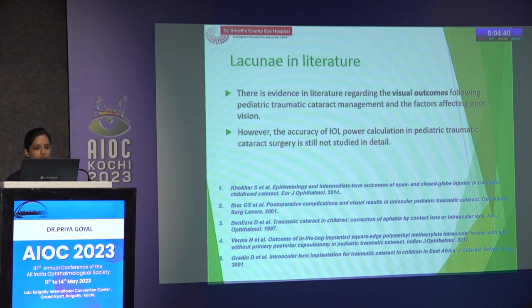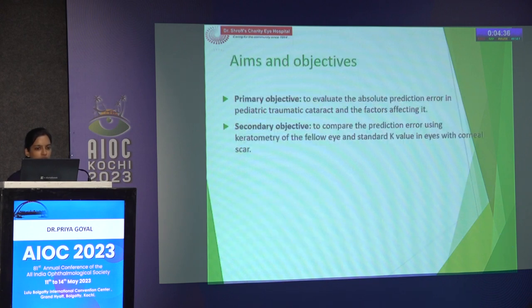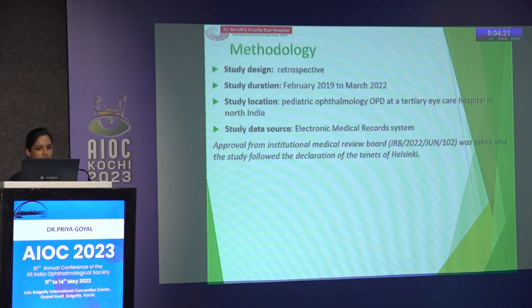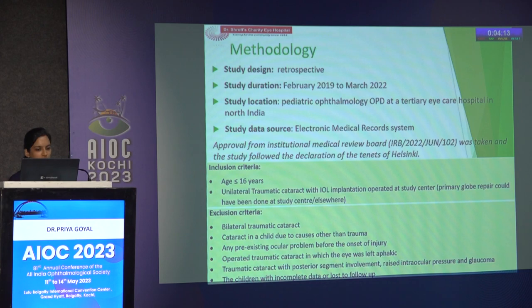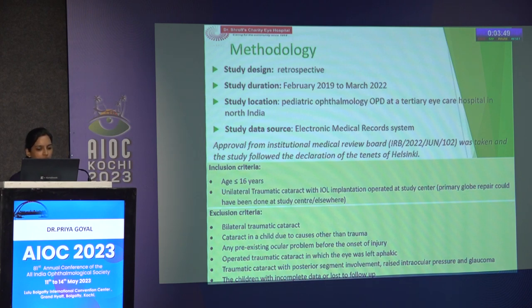The aim was to evaluate the absolute prediction error in pediatric traumatic cataract and factors affecting it, and secondarily to compare prediction error using keratometry of the fellow eye and standard K value in eyes with corneal scar. This retrospective study was conducted from February 2019 to March 2022. Inclusion criteria: age ≤16 years with unilateral traumatic cataract where IOL implantation was done at the study center. Excluded were other causes of cataract, pre-existing ocular problems, associated posterior segment involvement or glaucoma, eyes left aphakic post-surgery, and children with incomplete data or loss to follow-up.